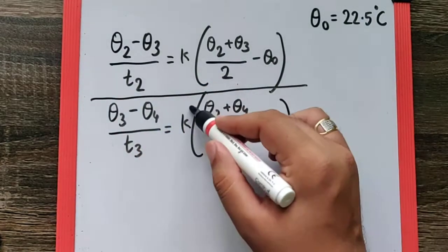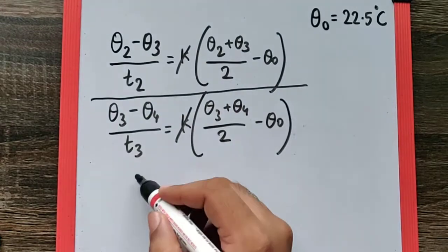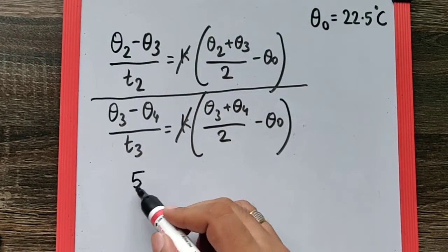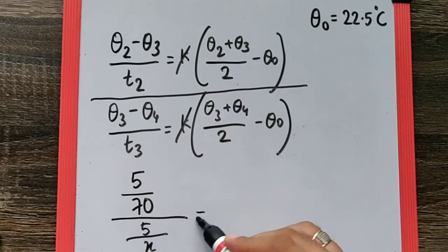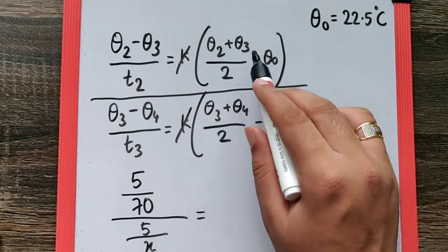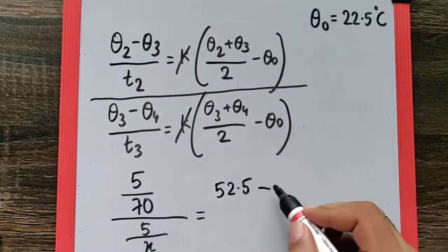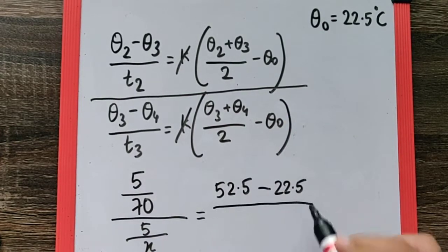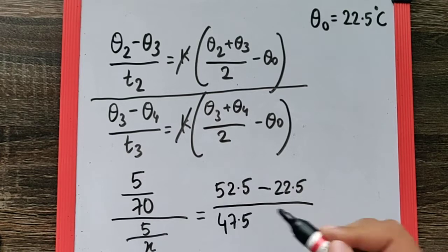If we take the ratio again, we again get rid of this k. Now if we substitute the values, theta 2 and theta 3 was 55 and 50 respectively, so the difference is going to be 5. The time taken for that was 70 seconds upon theta 3 and theta 4 is 50 and 45, so difference is going to be 5. That's 52.5 minus theta naught we have just found it as 22.5, upon theta 3 and theta 4 as I said is 50 and 45. The average of it is going to be 47.5 minus 22.5.